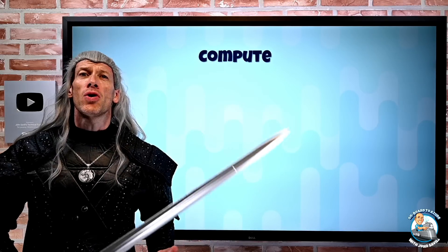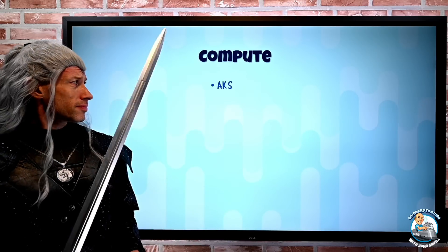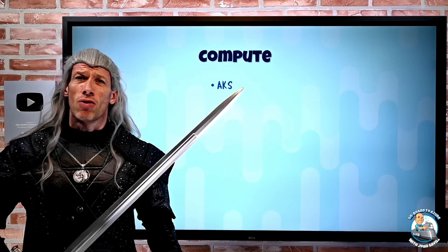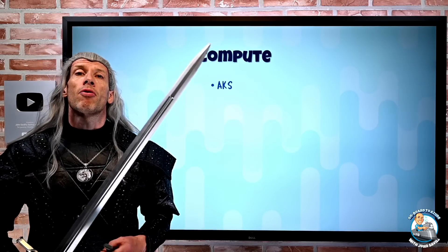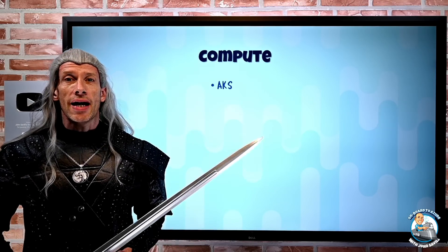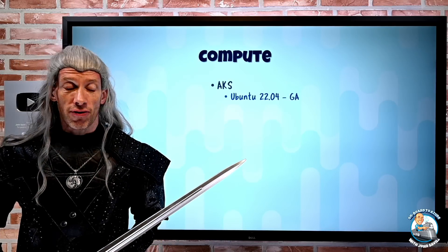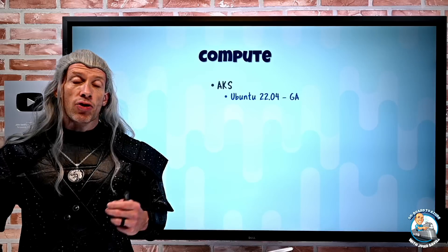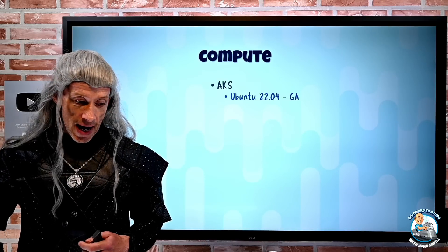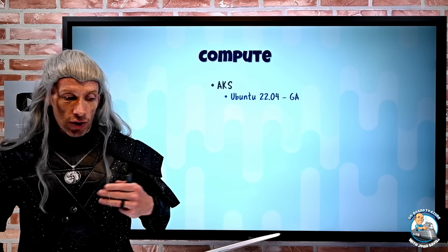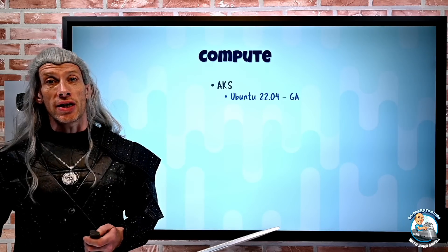On to what's new. On the compute side, there was a big AKS conference this week, KubeCon, and so a lot of enhancements all around AKS. Firstly, Ubuntu 22.04 has gone GA. So now with Kubernetes 1.25 on AKS, the OS it uses for the node pools will go from Ubuntu 18 to Ubuntu 22.